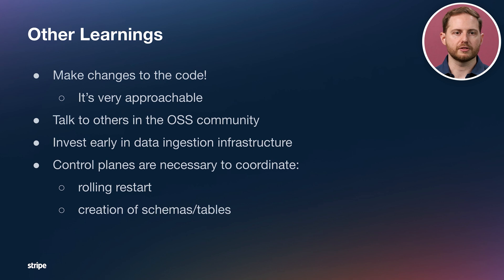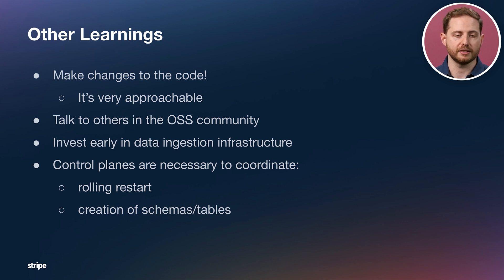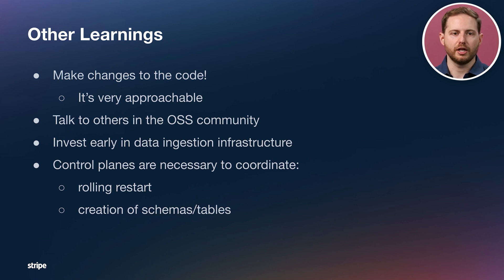Some general learnings: make changes to the open-source code — Pinot is easy to run locally, features are well abstracted, changes can be made and tested in isolation, and it's a very approachable codebase. Talk to others in the open-source community; the Slack channel is wonderful and others will have run into the same issues. Invest early in data ingestion infrastructure — integrating it somewhere users understand is really important, especially if you're not using standard Pinot ingestion methods. And control planes are necessary in production: codified workflows for rolling restarts and schema/table change management are much better than manual UI actions or arbitrary scripts.